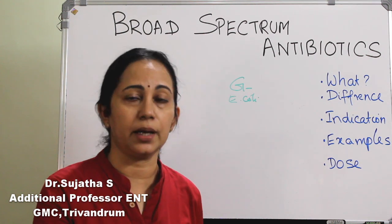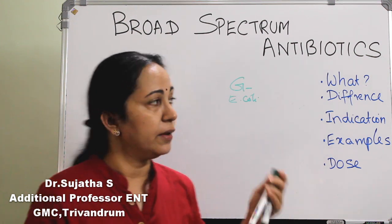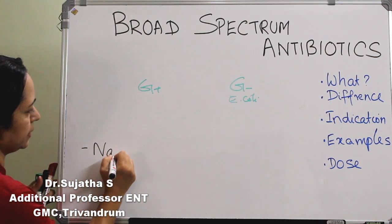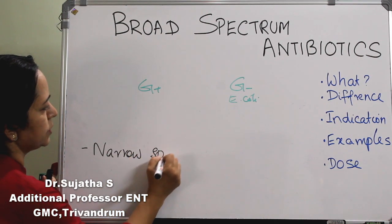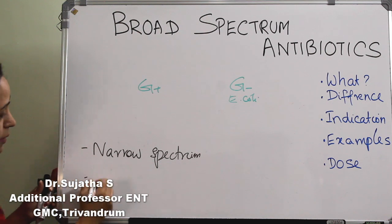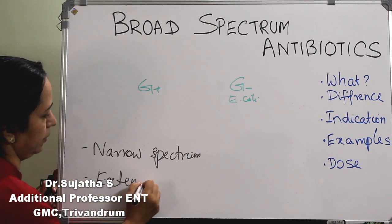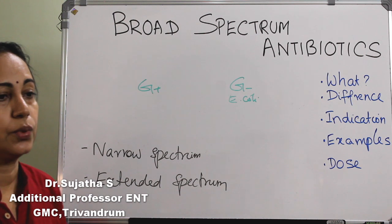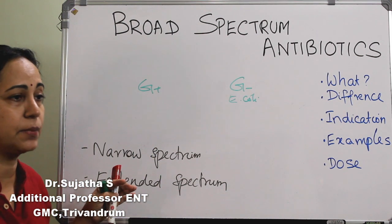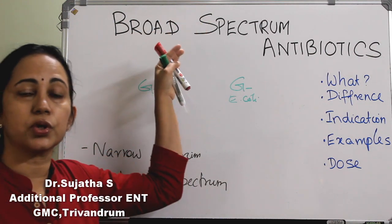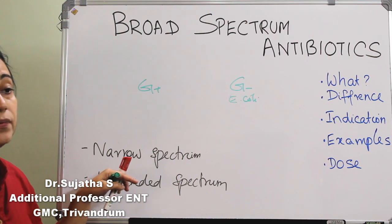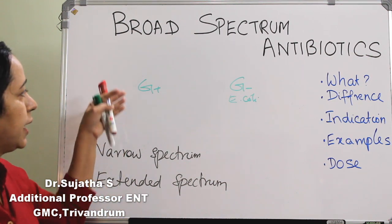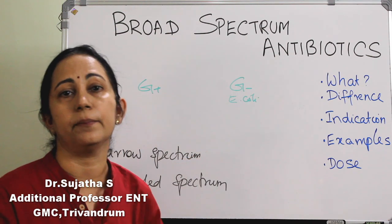Broad spectrum antibiotics will act on both gram positive and gram negative. So if there is broad spectrum, what are the other types of antibiotics? There is a narrow spectrum antibiotic and also there is an extended spectrum. Narrow spectrum antibiotics will act on a specific part — they will act on gram positive. And this extended spectrum will act on gram positive and some of the gram negative organisms.